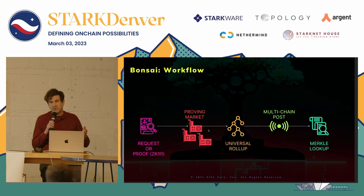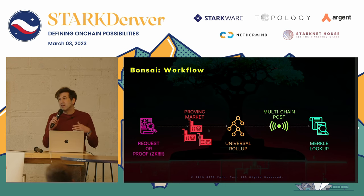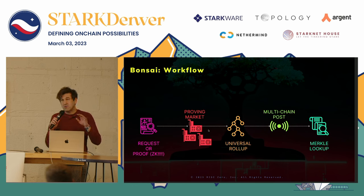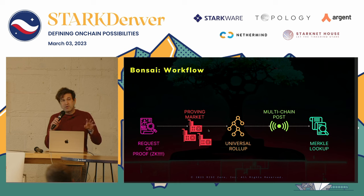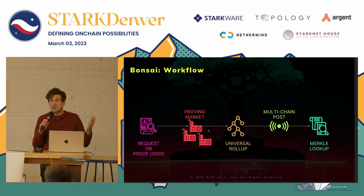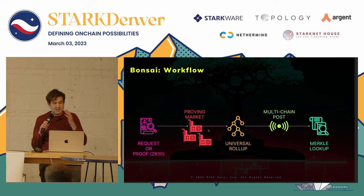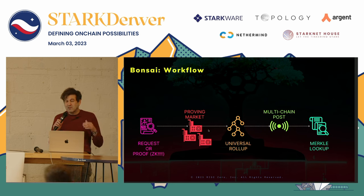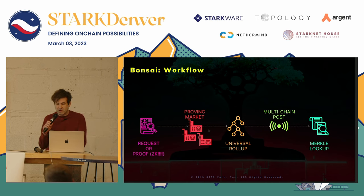In terms of the workflow: when you initially generate a request, that request goes to a proving market. For our initial launch we are going to be running most of the provers ourselves, but we eventually have a goal to decentralize that proving market so that any user who wants to can run proofs on behalf of the network. The nice thing about zero-knowledge proofs is that because they come with their own receipt of correctness, there are no security implications from doing this. Those proofs are then rolled up and posted to multiple chains, and once posted you can just do a Merkle lookup.